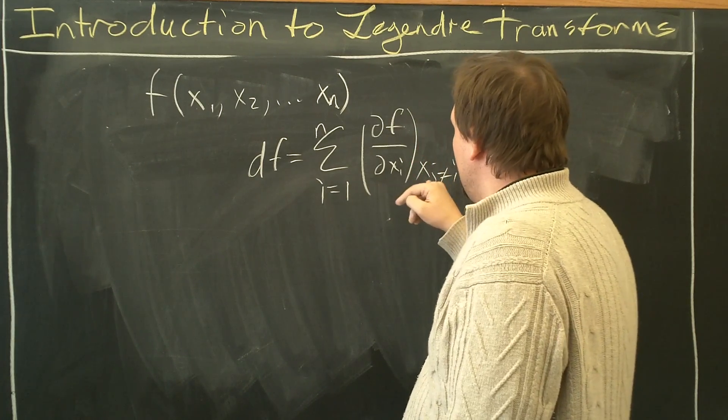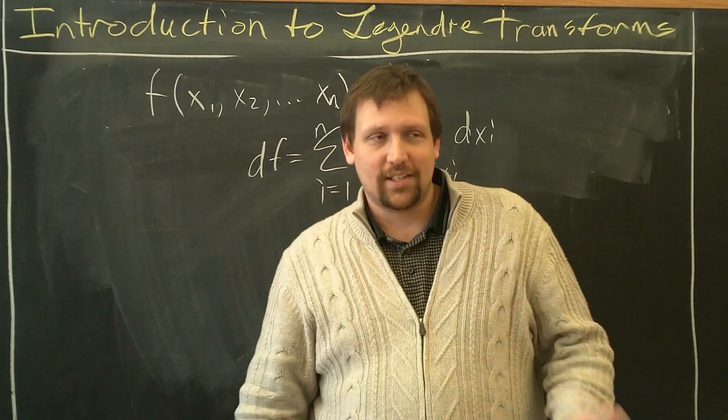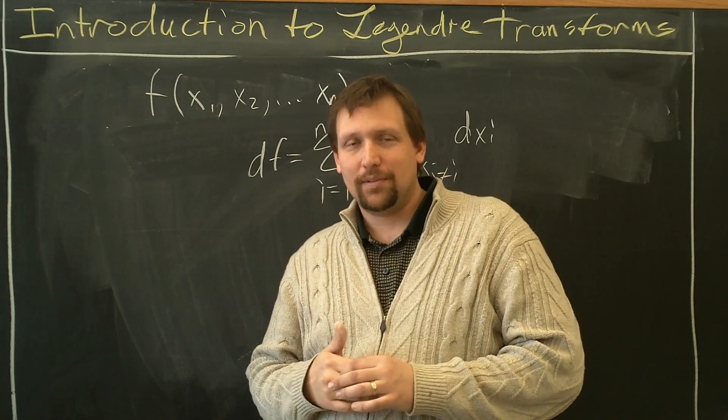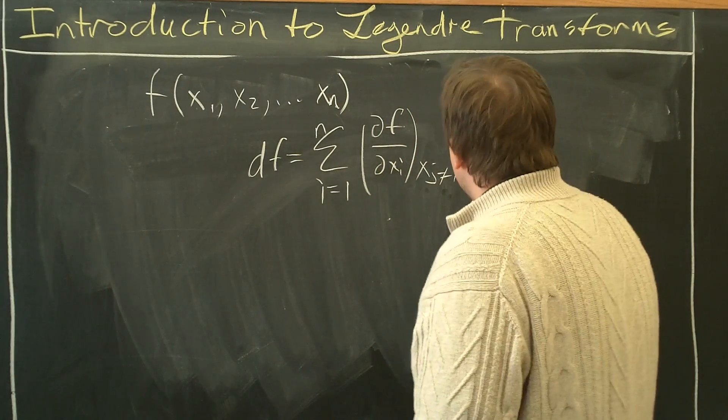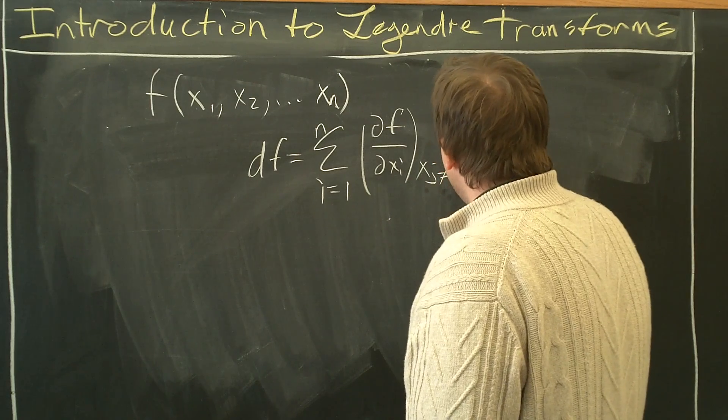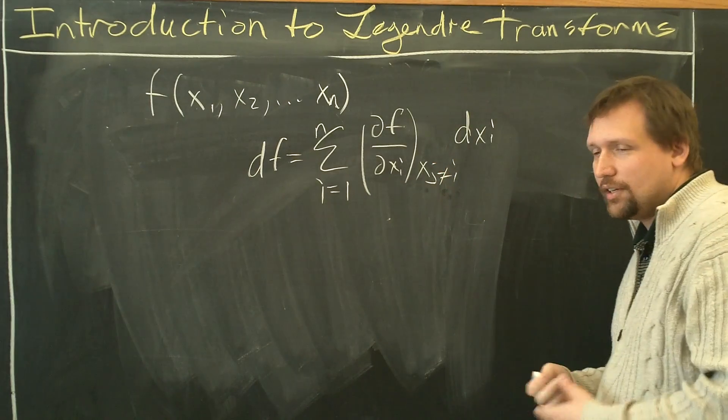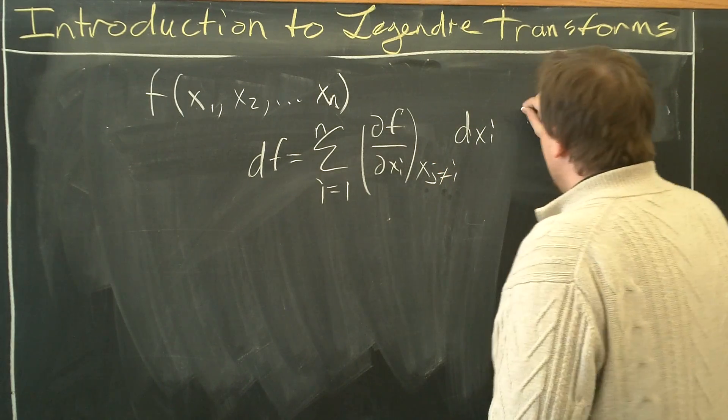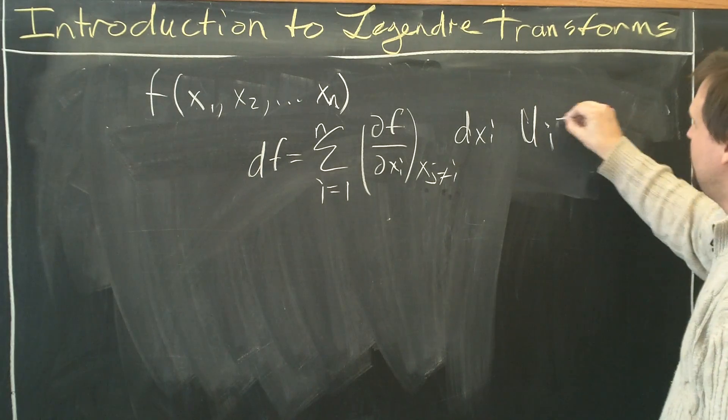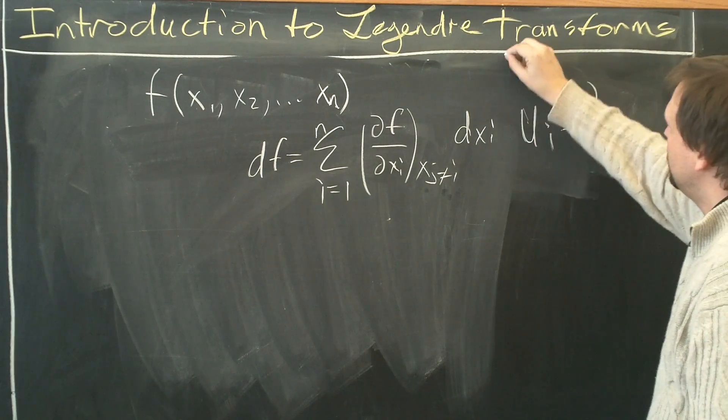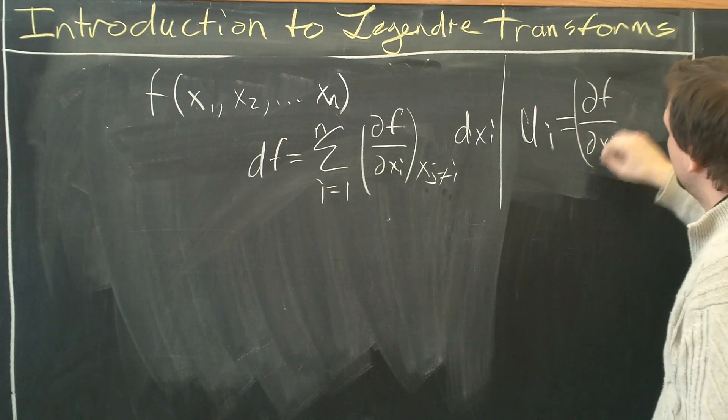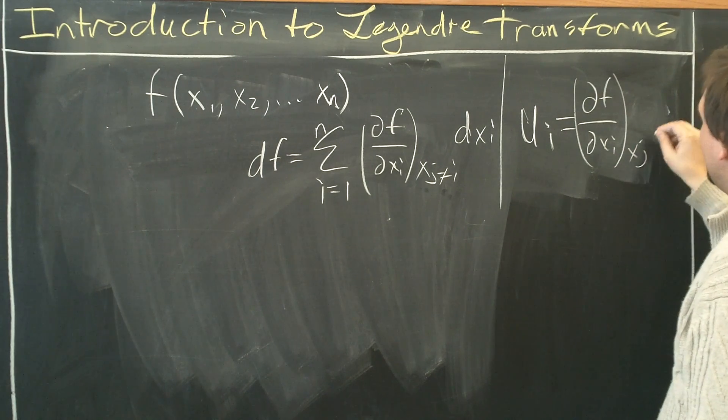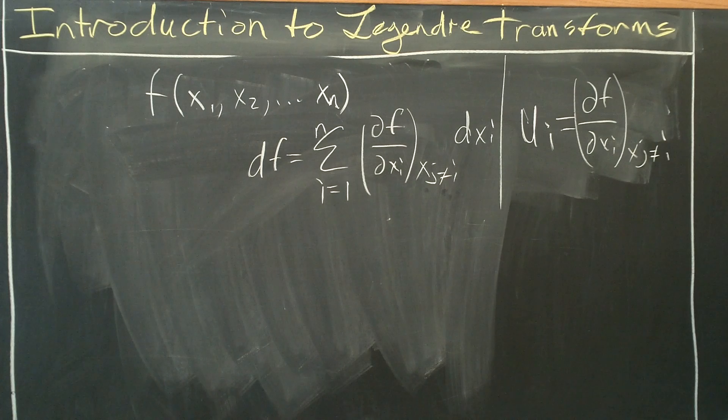If xj were to equal xi, then we'd have the derivative of something that has to be held constant and that's just automatically zero. So we can reduce the notation complexity here by defining ui equals partial f partial xi with xj not equal to i. Take a second to write that down in your notes.